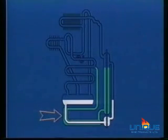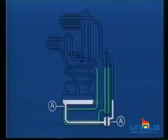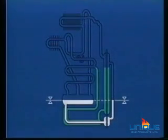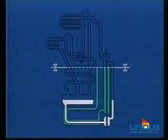Pipe A contains a rich solution with 34% of ammonia. The remainder of this solution is composed of distilled water, which keeps the same level as in the tank. Pipe B contains a poor ammonia solution composed almost entirely of distilled water, and keeps the entrance level of the absorber.